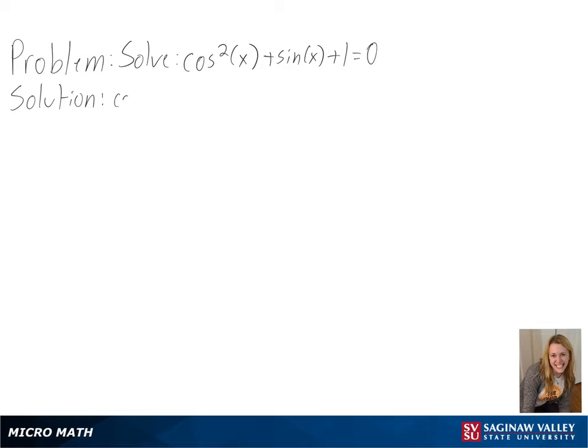Our problem is to solve cosine squared of x plus sine of x plus 1 equals 0.